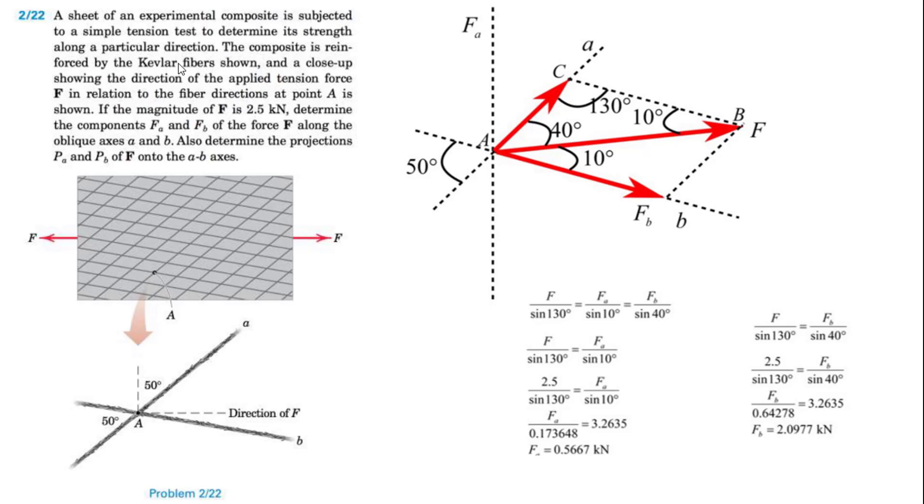The composite is reinforced by Kevlar fibers shown, and a close-up showing the direction of applied tension force F in relation to the fiber direction at point A is shown. If the magnitude of F is 2.5 kN, determine the components FA and FB of the force F along the oblique axes A and B, and also determine the projections PA and PB of F onto the A-B axes.